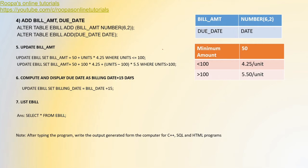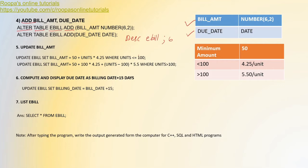The next command is to add the bill amount and due date fields. For DDL commands we use ALTER TABLE. So the command is: ALTER TABLE ebill ADD bill_amount NUMBER(6,2). This is given in the question. Then ALTER TABLE ebill ADD due_date DATE. After running this, if you run DESC ebill again, you will get all six fields instead of the original four, to confirm that the new fields were added successfully.